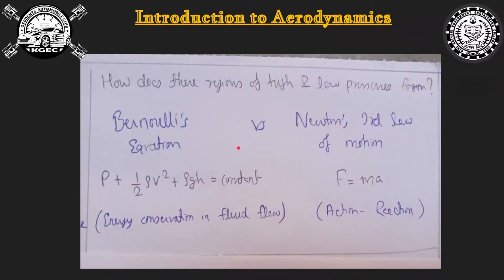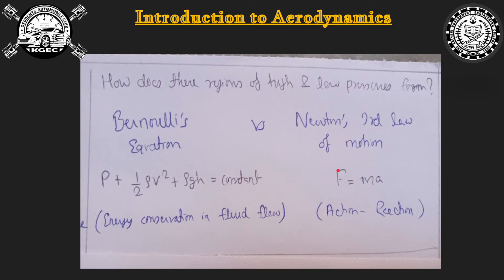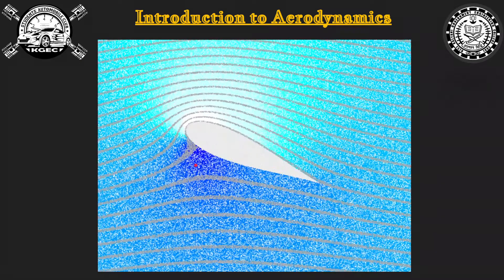Which one is the correct explanation? In many books and lower classes, Bernoulli's equation is taught as the reason why lift is created, but this is actually not correct — there is a false assumption made. The actual reason is Newton's third law: the down wash of air particles explains why lift is produced. Let me tell you what the wrong assumption is in Bernoulli's equation.